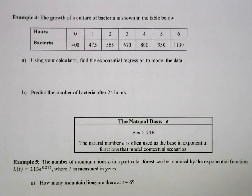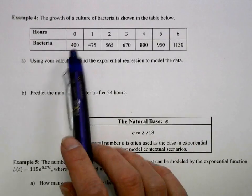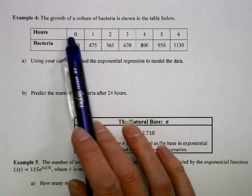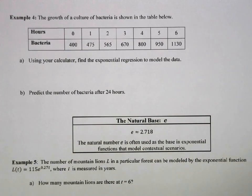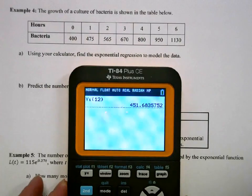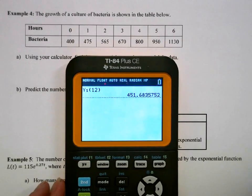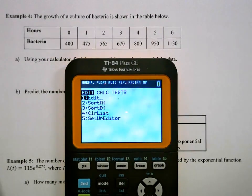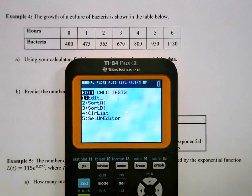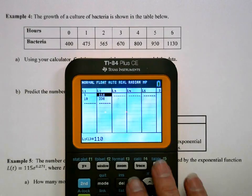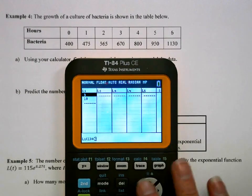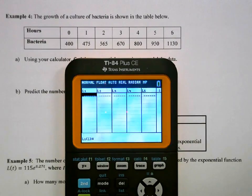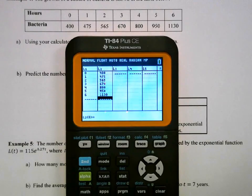Lots of things can be modeled with exponential growth. One example of that is bacteria growth. So we've got a table that shows us the bacteria at a certain number of hours. And we're going to run another exponential regression. So let's go through those steps again. We go to stat, edit. We're going to go ahead and clear out our last values here, and then we'll type these in. So my data is entered.